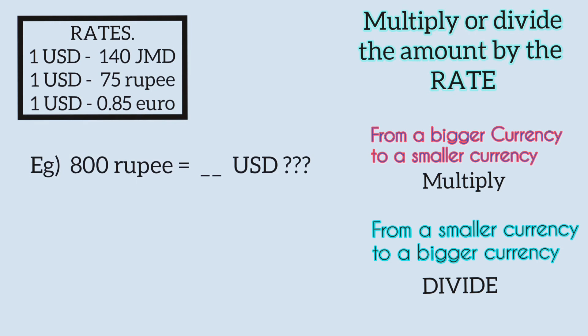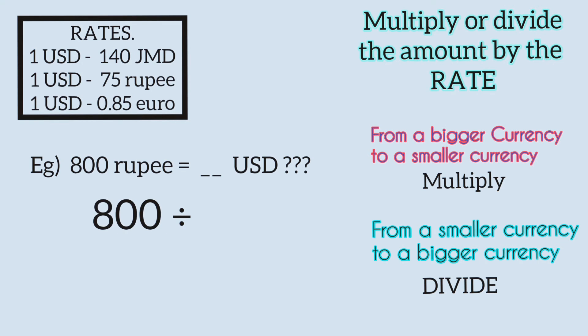For this one, you are converting from a smaller currency to a bigger currency, which means you need to divide the amount by the rate. So the amount is 800 divided by the rate, which is 75. And this gives you 10 dollars and 67 cents.